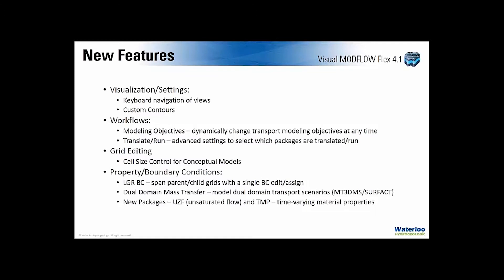Getting into the new features, the first set relates to visualization and settings. You can now navigate with the keyboard through all views, giving fine control over the direction of the model. You can also digitize and move your model at the same time — if you're zoomed in to digitize a fine feature like a river or ditch, you can pan with the keyboard while maintaining digitization steps. When rotating the model, you can rotate in one direction, either vertically or horizontally. You can also add custom contours, specifying exact contour levels so the corresponding contour lines will appear.